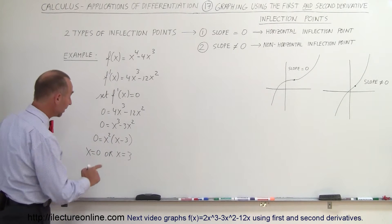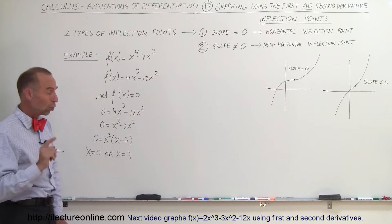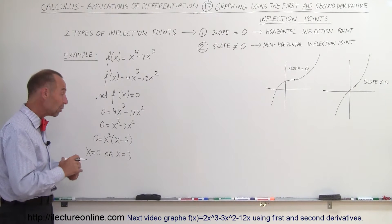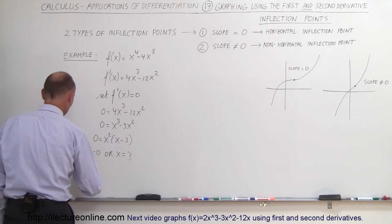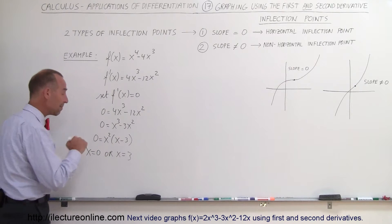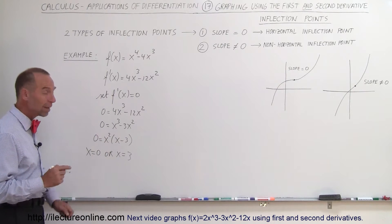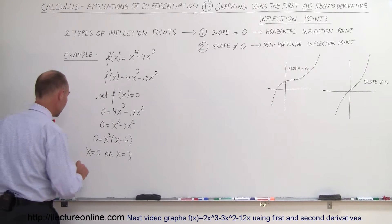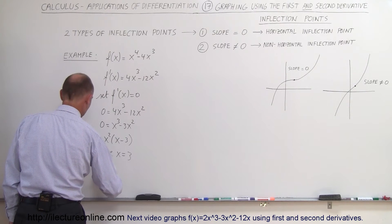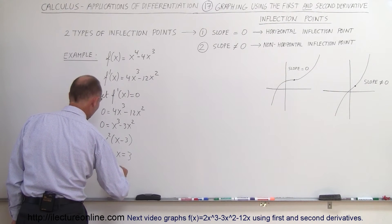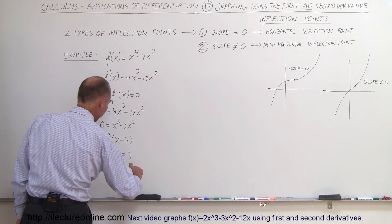What that means is these could be max, min, or horizontal inflection points, and we won't know for sure until we continue with the problem. So x = 0 may be a max, min, or inflection point. x = 3 may also be a max, min, or horizontal inflection point.